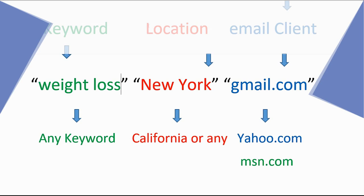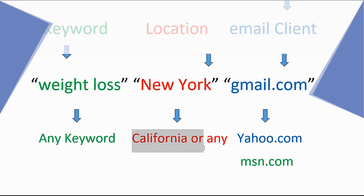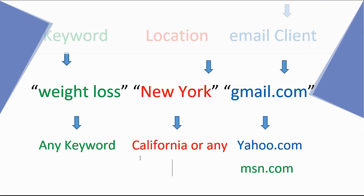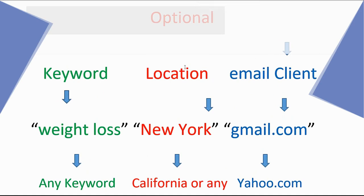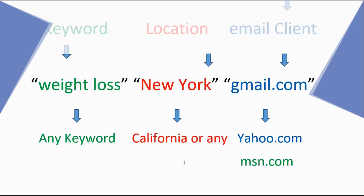For the location I am using New York. You can use any location — California, Texas, Dallas, Los Angeles, Boston, Chicago — anything you want. It's optional. You don't need to use any location if you don't want to. If you're looking for a certain location then you can use it, otherwise you can skip the location.